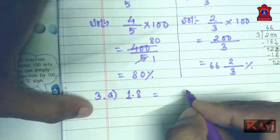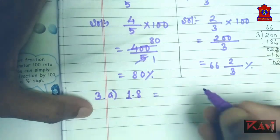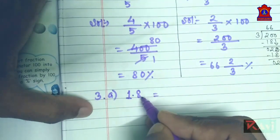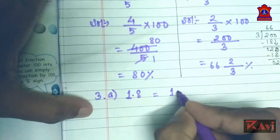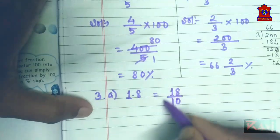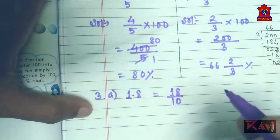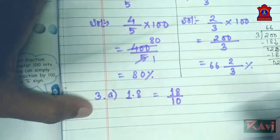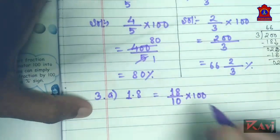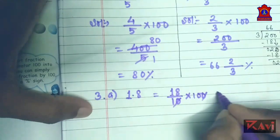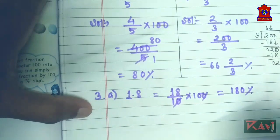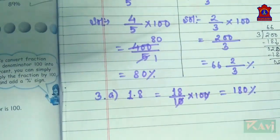First, convert this decimal into a fraction. What is the place value of 8 after the decimal? Tenth. So write 18 upon 10. We have converted 1.8 into a fraction. Now multiply by 100. The zeros cancel, so 18 into 10 is 180 percent.